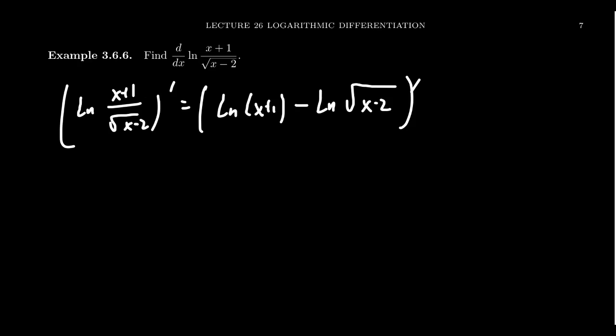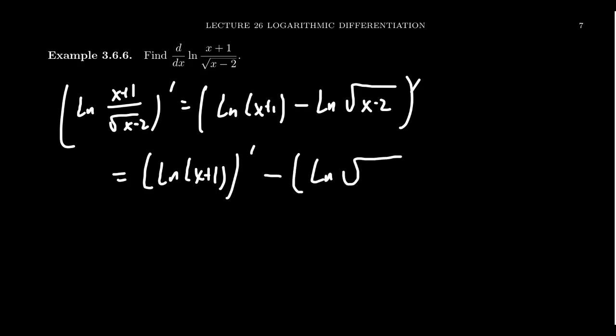This is one of the laws of logarithms — the quotient inside becomes a difference on the outside. This is compatible with differentiation rules because the derivative of a difference is the difference of the derivatives. So you can take the derivative separately in this calculation, and by doing so we actually can avoid the use of the quotient rule entirely.